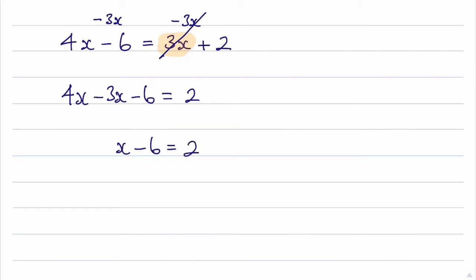The next thing I need to do is to deal with the minus 6. To deal with that I add 6 to the left hand side, and therefore I need to add 6 to the right hand side. The 6's here will cancel, leaving me with x. And 2 plus 6 is 8. So the final answer is that x is equal to 8.